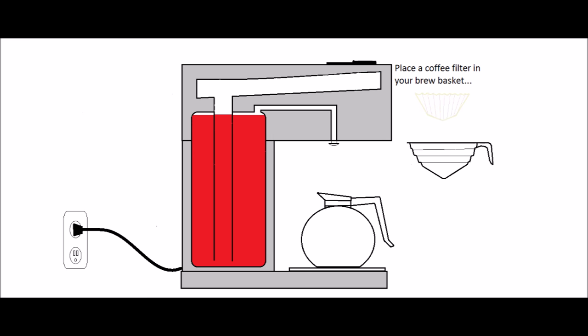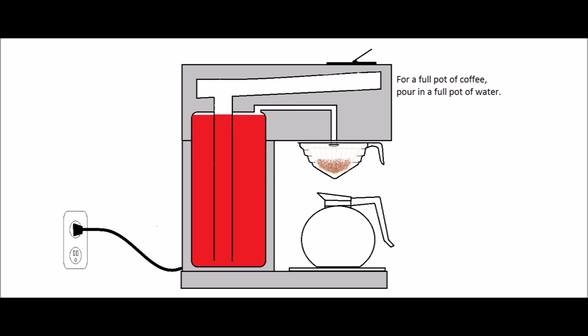When you're ready for that first cup of coffee, remove the brew basket, place the correct filter in it, add coffee, and then replace the brew basket into the slot. Now you're ready to pour in your water and start brewing your coffee.